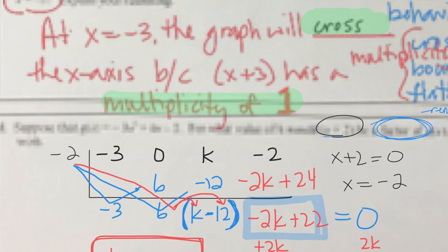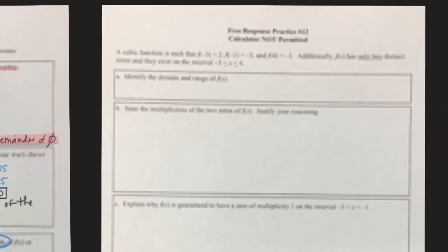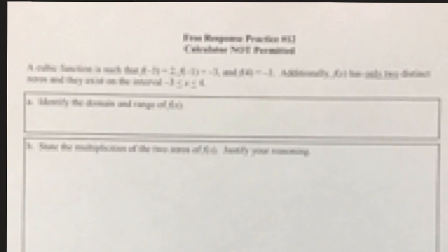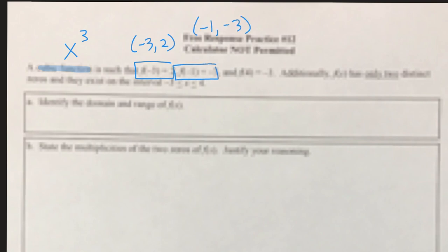Let's look at FRQ number 12. We're given some information: we have a cubic function — something raised to the third power — such that when x is negative 3 the y-value is 2, when x is negative 1 the y-value is negative 3, and when x is 4 the y-value is negative 3. They're giving us three points on this cubic function without telling us the equation.